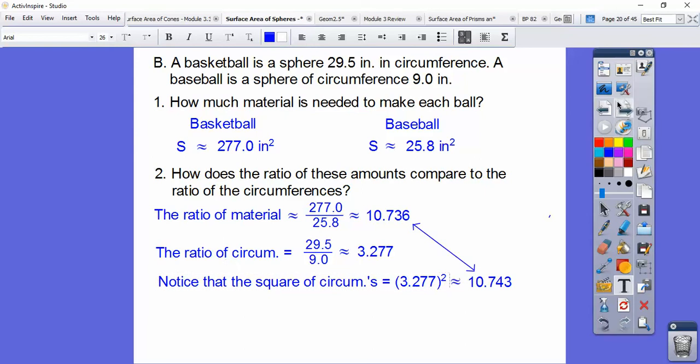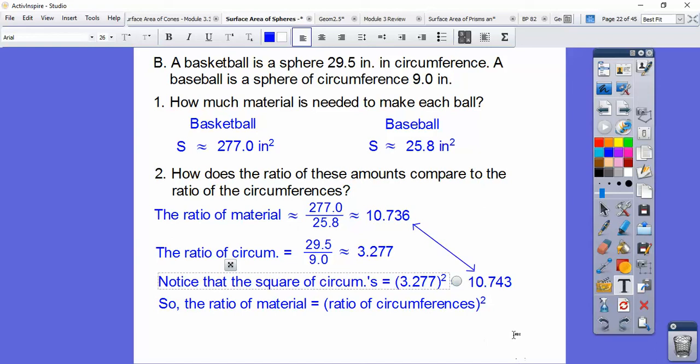Our answer is this. The ratio of the material is going to be the square of the ratio of the circumferences. And if you don't recognize it, remember the formula is 4πr².